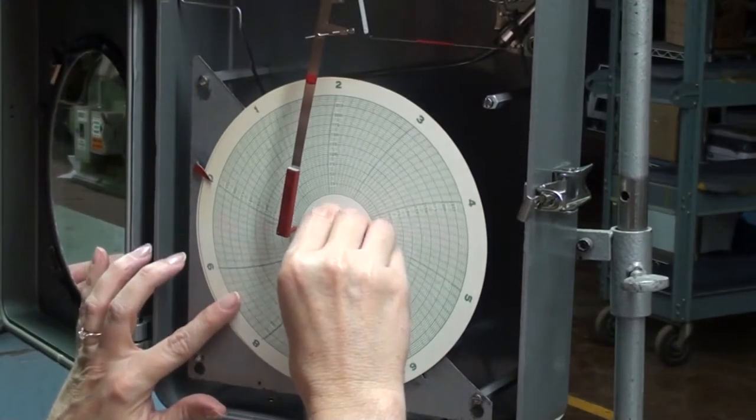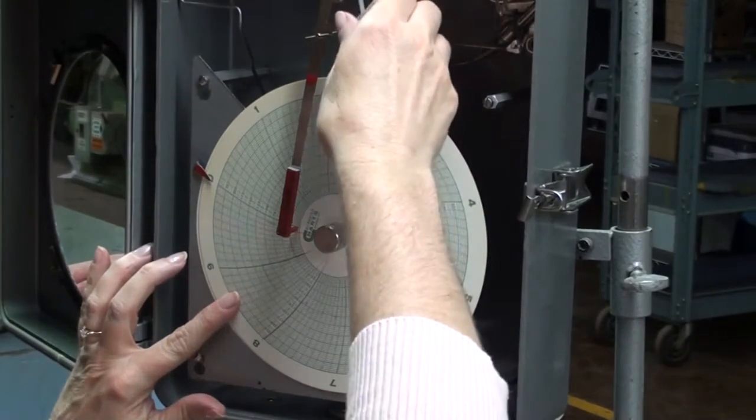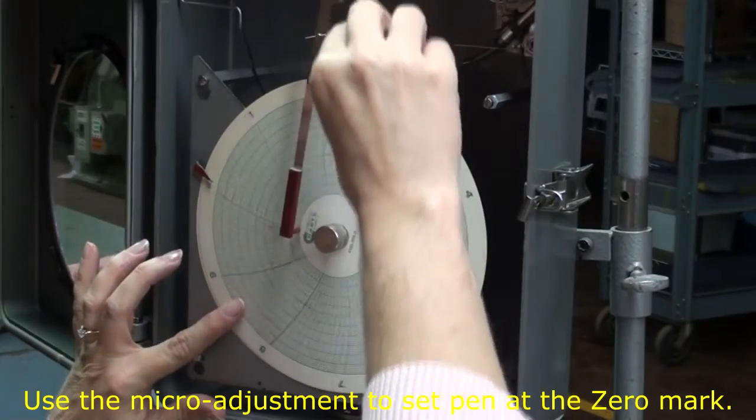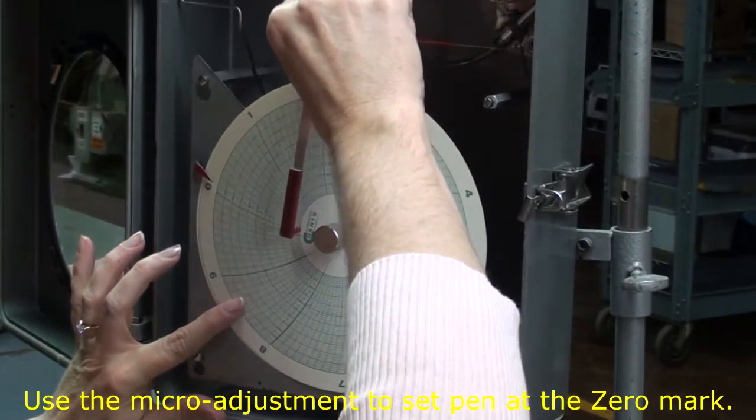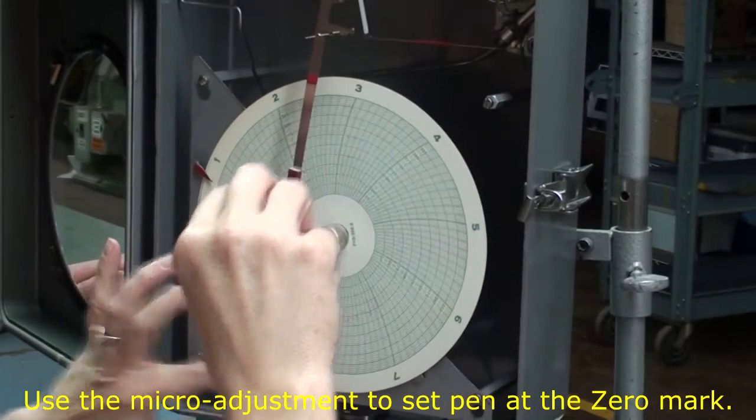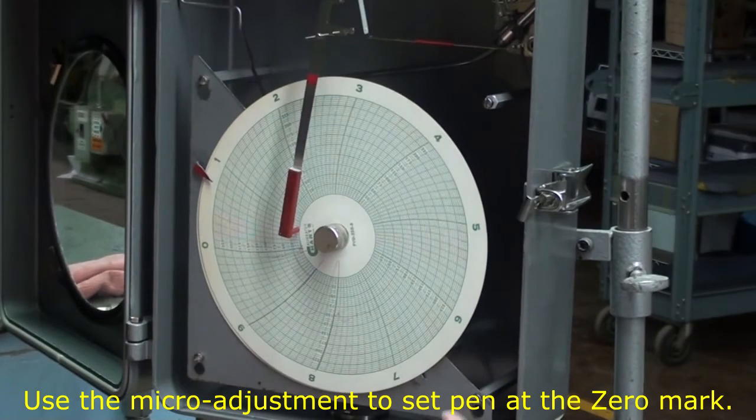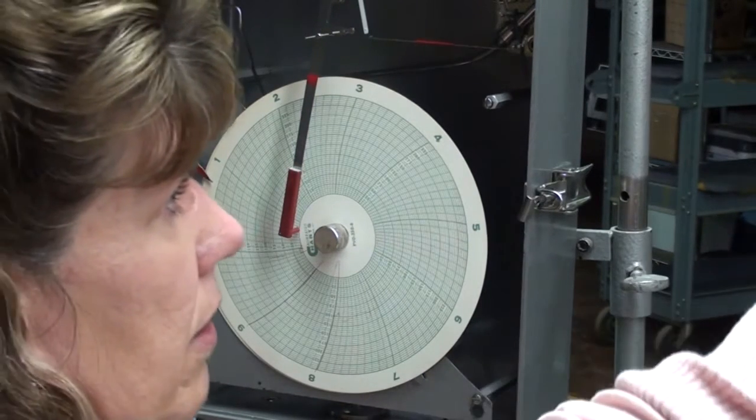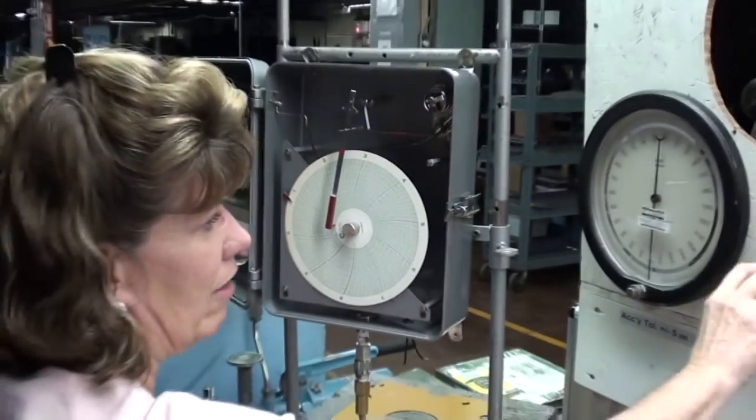So now we've set it as close as we can to zero using this. So we want to take our micro adjustments, set it down to zero. All right. We're on zero. Today I'm using gauges to calibrate the system with. So I'm going to cut off my exhaust.